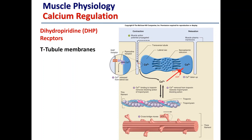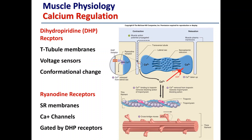We have a number of dihydropyridine receptors, known as DHP receptors, within the T-tubules. They effectively act as voltage sensors and cause a conformational change. They are linked to ryanodine receptors, which are housed on the sarcoplasmic reticulum membrane. Here's a zoom in on these particular structures — the DHP and ryanodine receptors. The ryanodine receptors are bound to the sarcoplasmic reticulum membrane and act as a calcium channel gated by the DHP receptors. When a DHP receptor senses a change in voltage associated with the electrical stimulus, this causes a conformational change in the ryanodine receptor, allowing the calcium channel to open. Calcium then diffuses down its concentration gradient from its high concentration in the sarcoplasmic reticulum out into the cytosol.